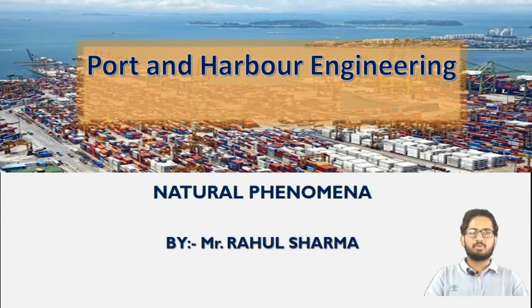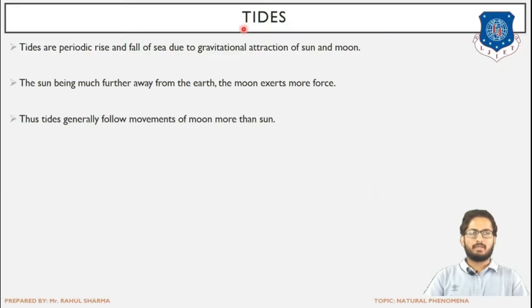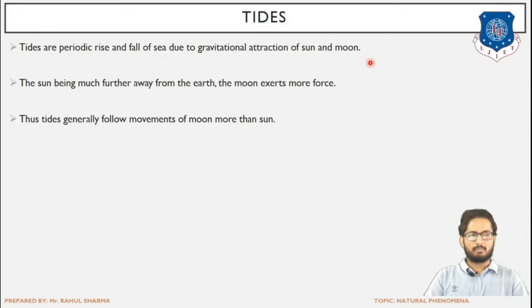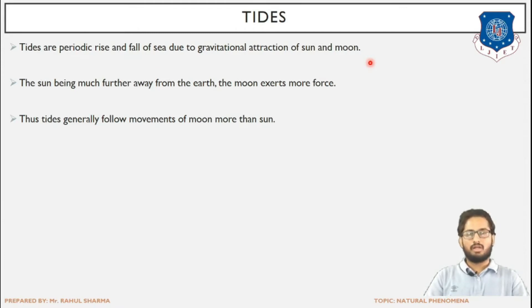First of all we will be learning about tides. Tides are the periodic rise and fall of the sea due to gravitational attraction of the sun and moon. Basically due to the gravitational forces acting on it, the rise and fall of the water level occurs.